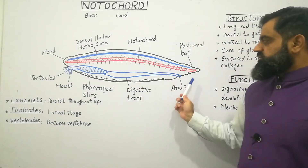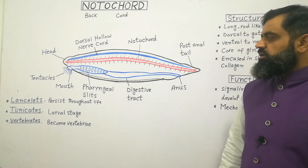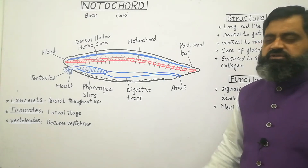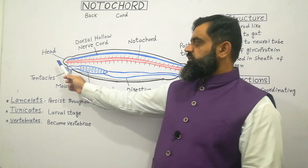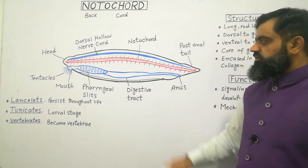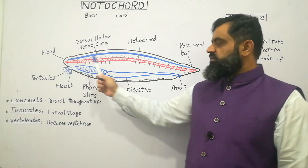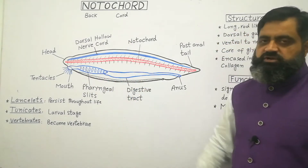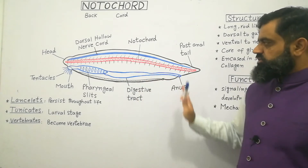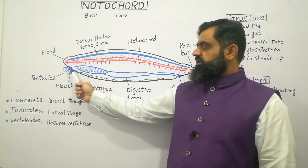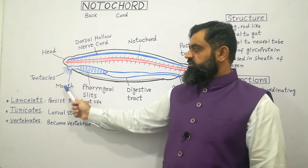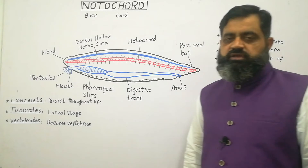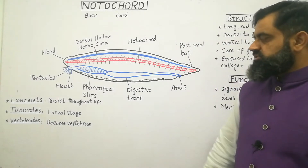Let's look at this diagram. This is an animal belonging to Cephalochordata, also known as lancelets or amphioxus. This is the anterior side of the animal and this is the posterior side — anterior is the head side while posterior is the tail side. This is the dorsal side and this is the ventral side. This is the cross section of the animal. On the front head side, they have tentacles around the mouth.